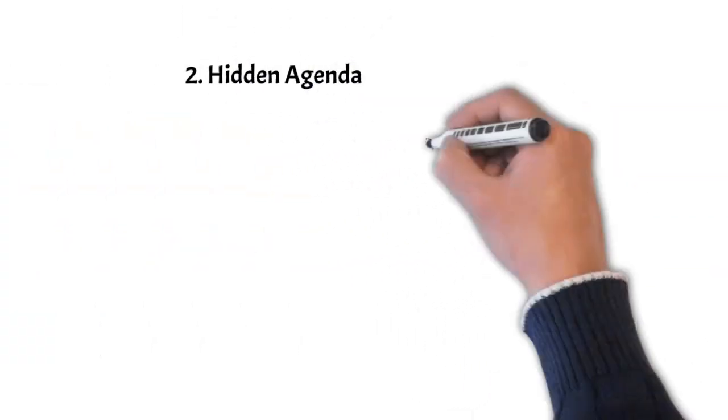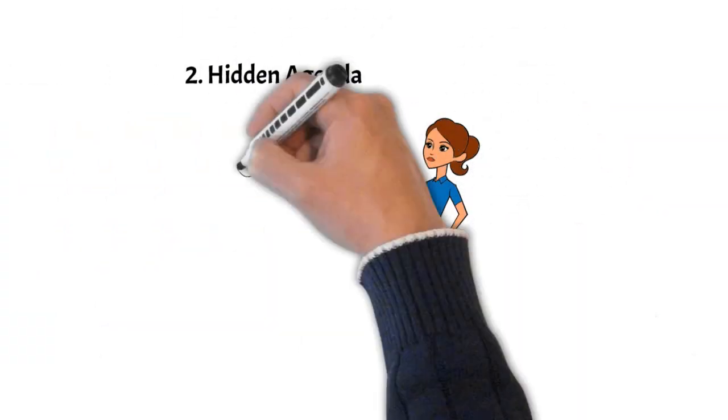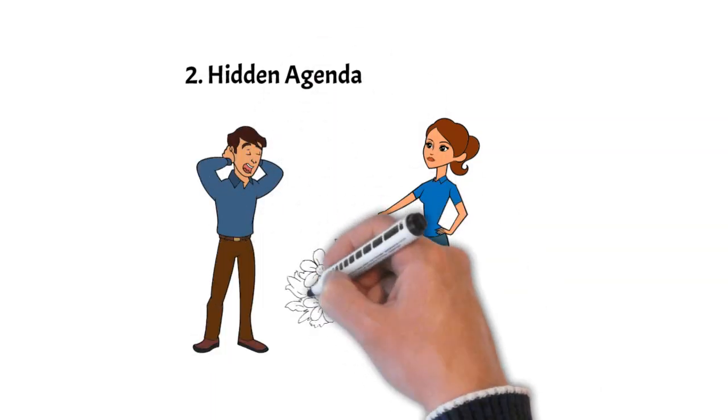Number two, hidden agendas. They can offer assistance with the unconscious expectation of getting something in return, leading to feelings of manipulation or deceit.